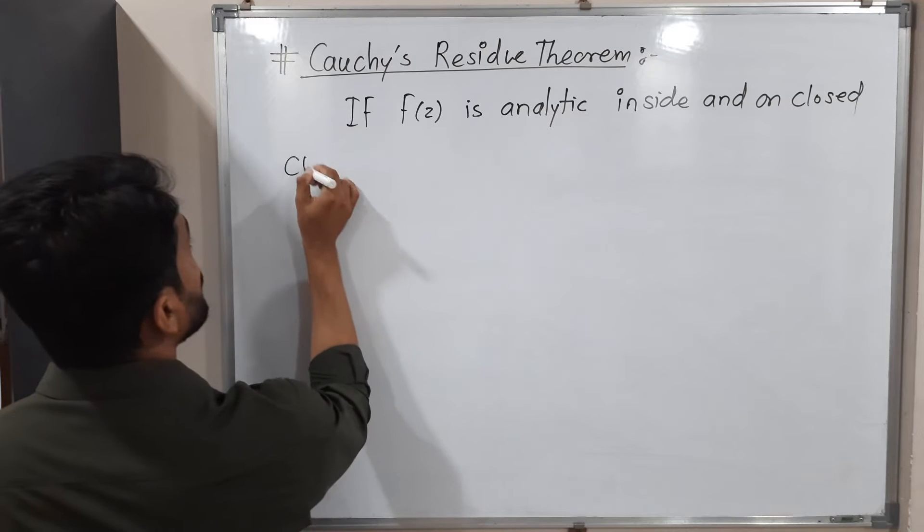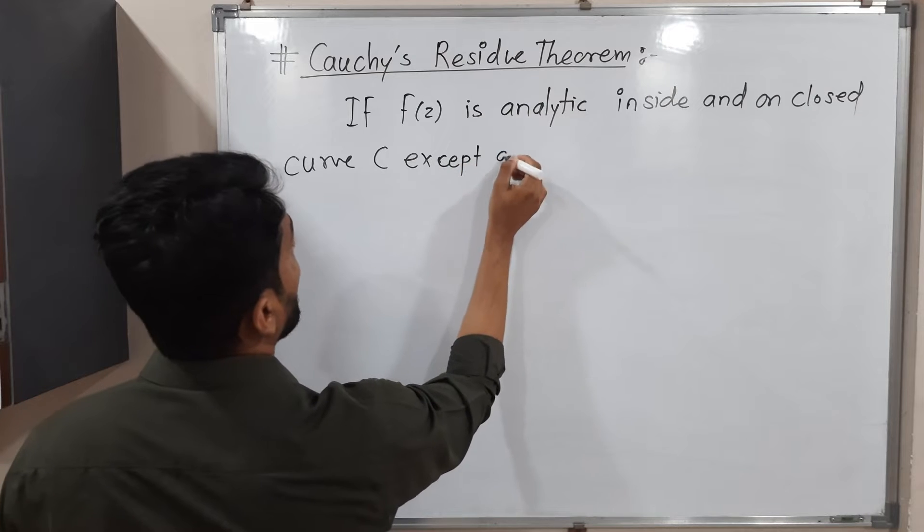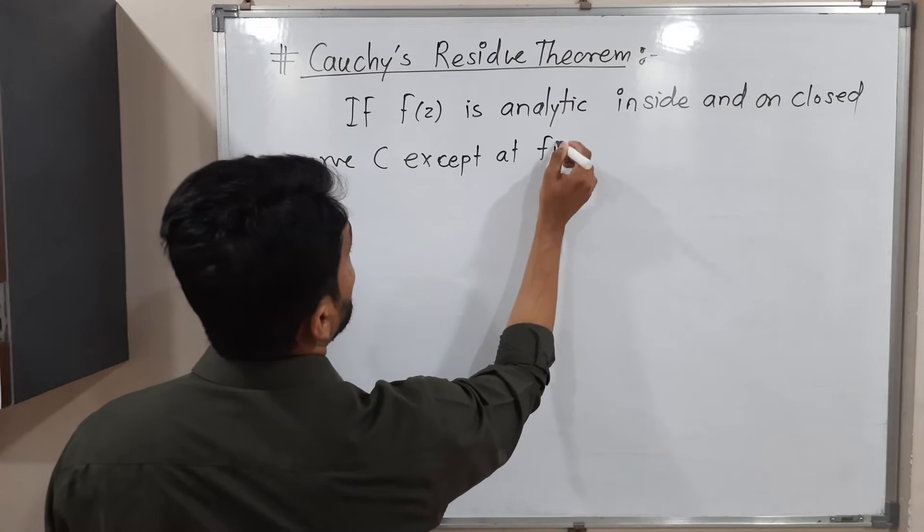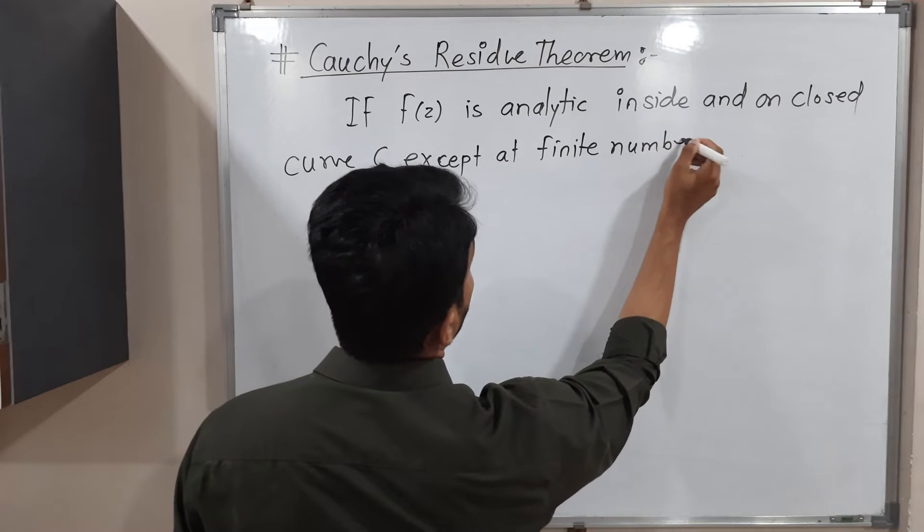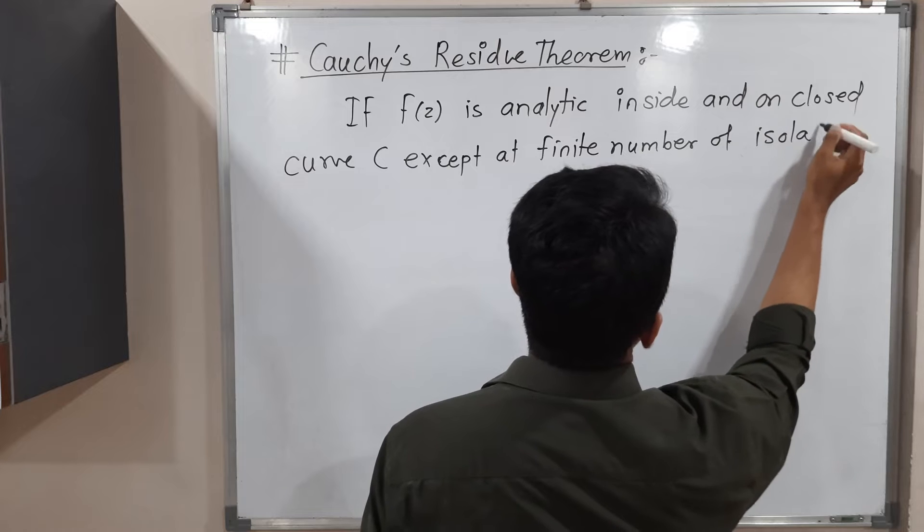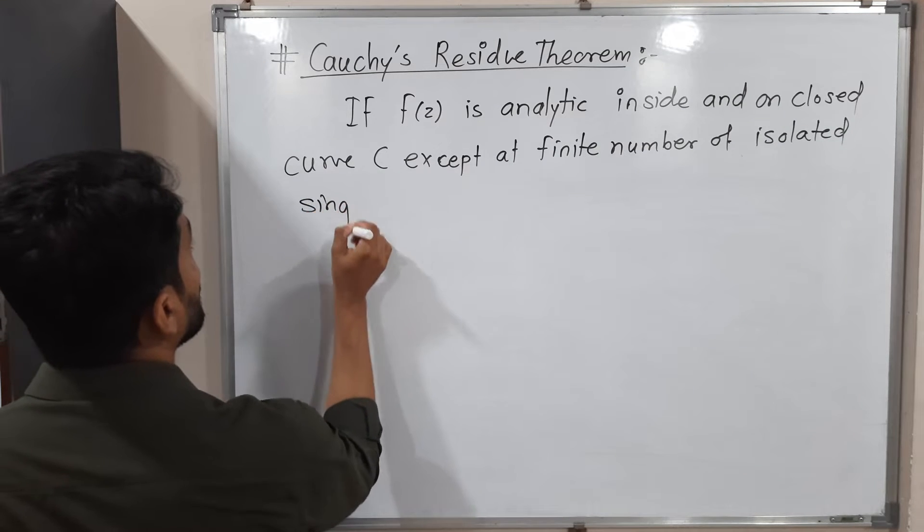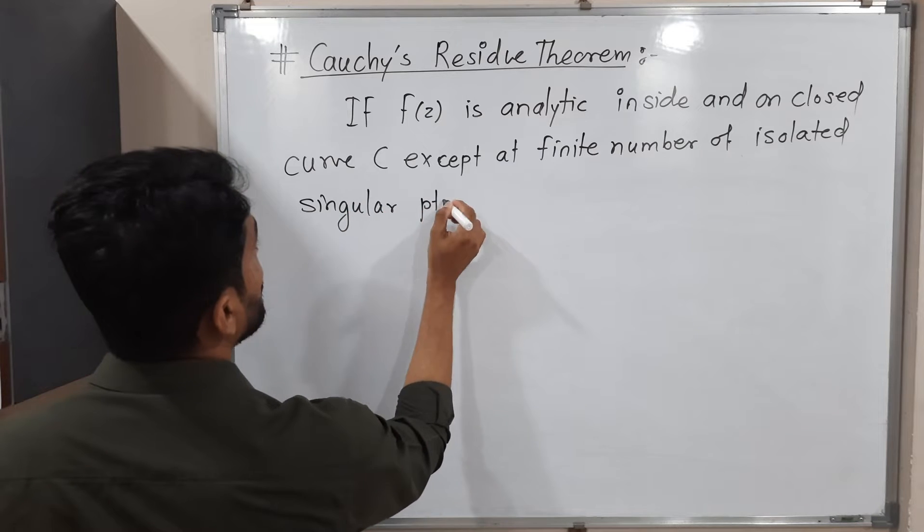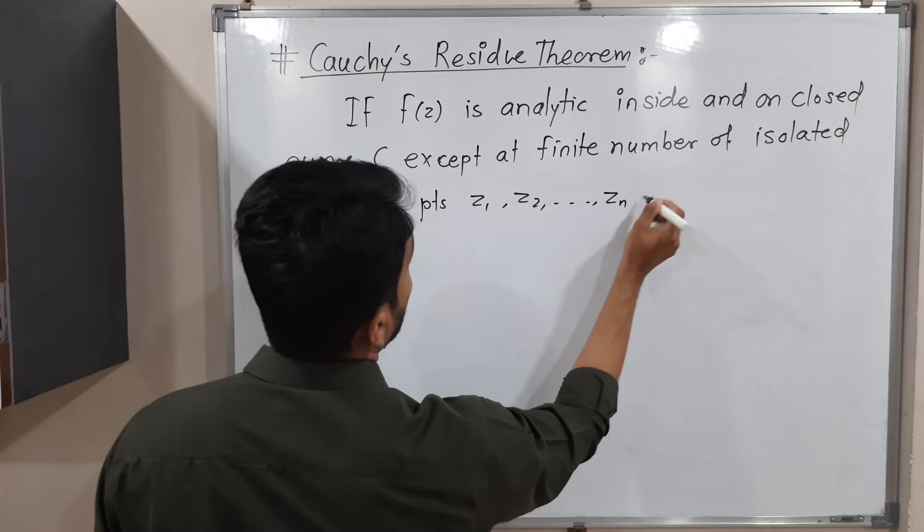a closed curve C, except at a finite number of isolated singular points z1, z2, and so on, zn inside C, then